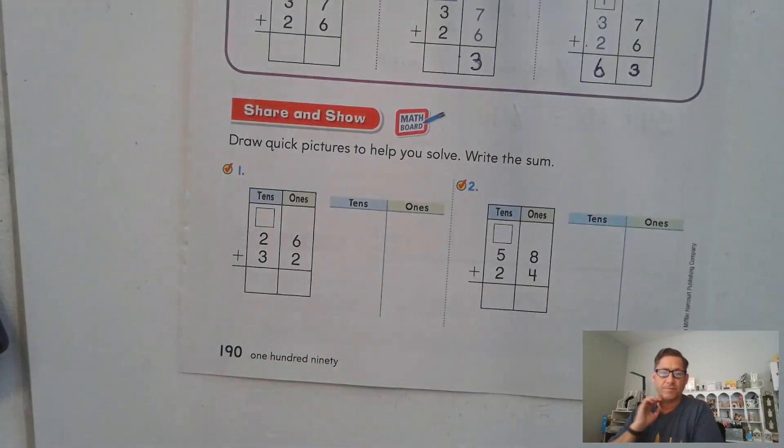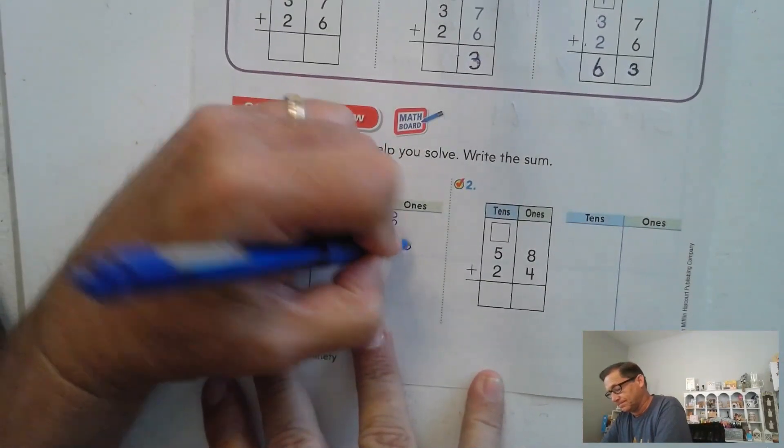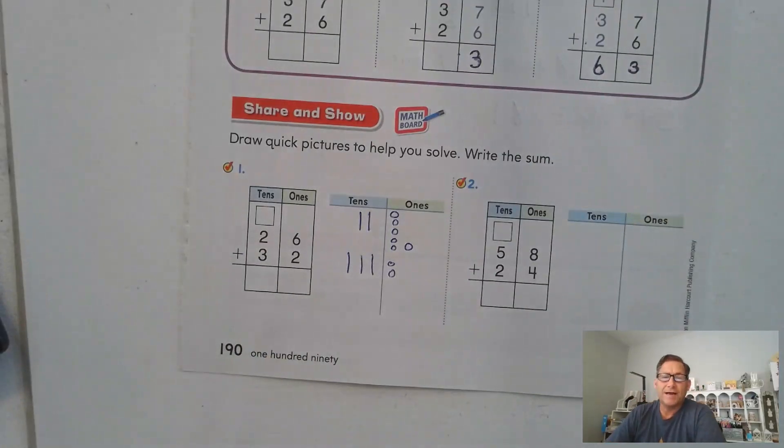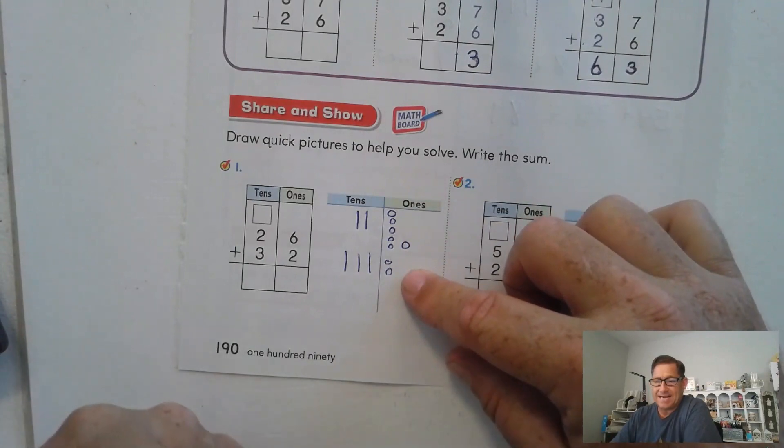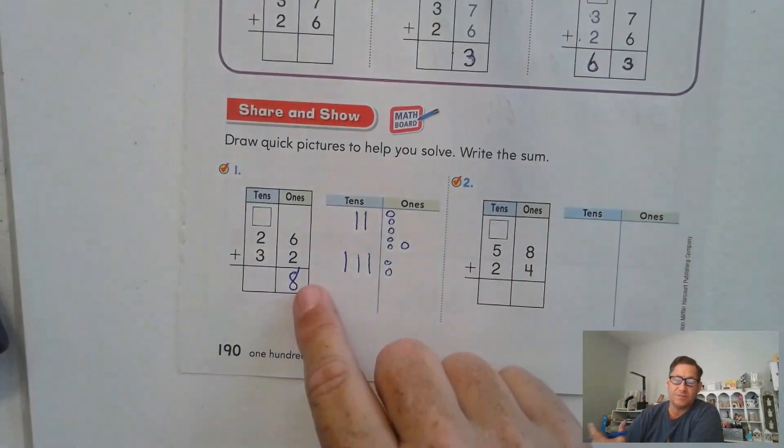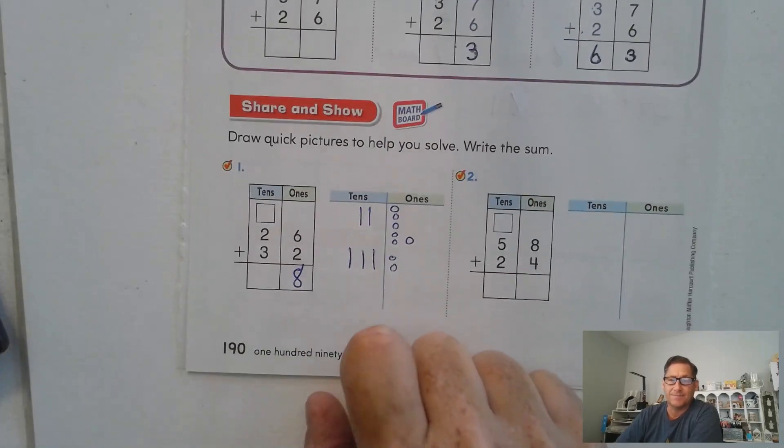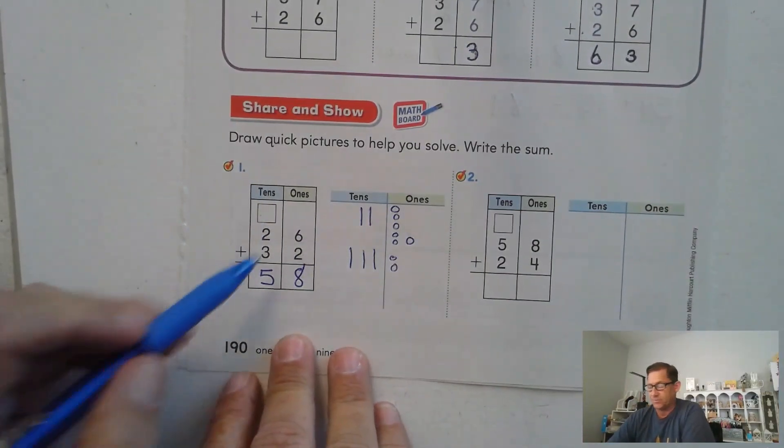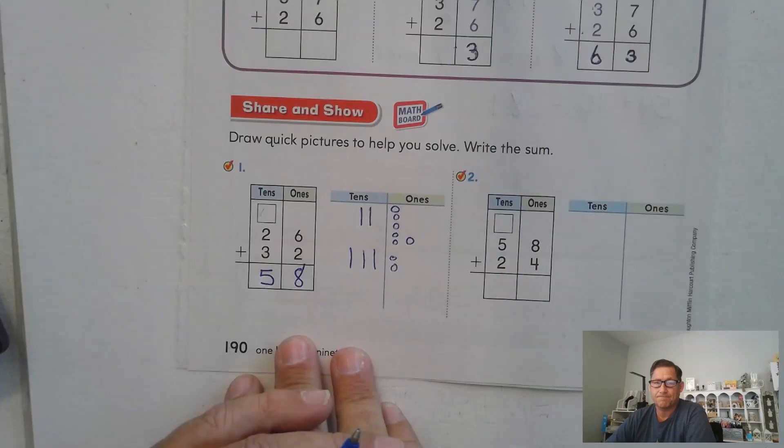So let's look at this, draw a quick picture to help you solve 26 plus 32. So there's our 26 and 32. Now are there any ones to regroup? Are there any ones that we need to trade? Well, we have six here plus two more. That's eight ones. So we don't go past 10 ones. So there's nothing to trade. So then we'll just add up the three tens and the two tens. Three tens plus two tens is five tens. So did we regroup anything? No. And so we really don't even need that box this time because we didn't regroup.